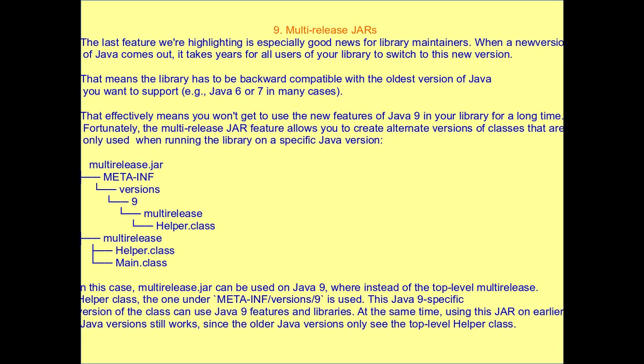Eighth, multi-release JARs: as a library, it has backward compatibility. If you want to support older Java versions like Java 6 and Java 7, you can still do so. That's all about the Java 9 features.